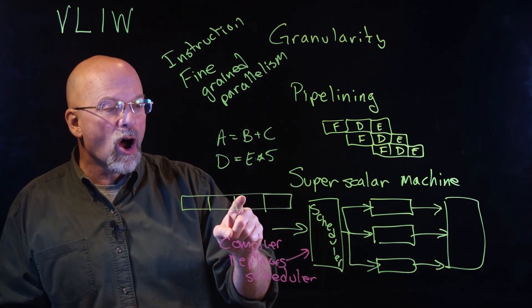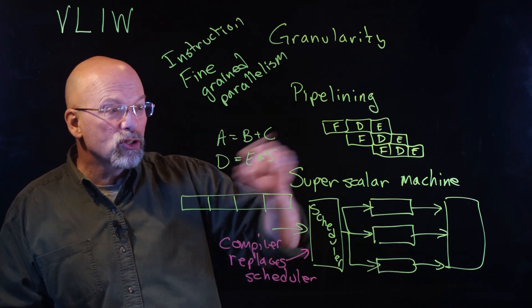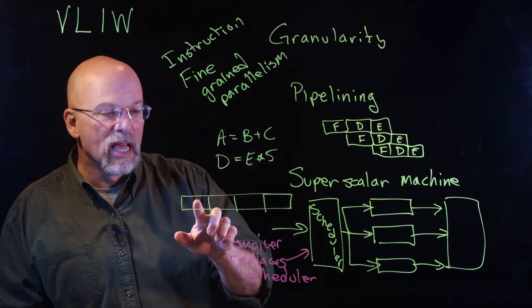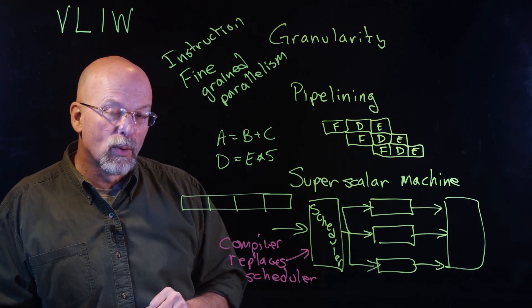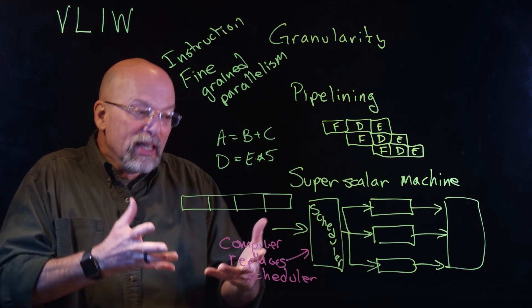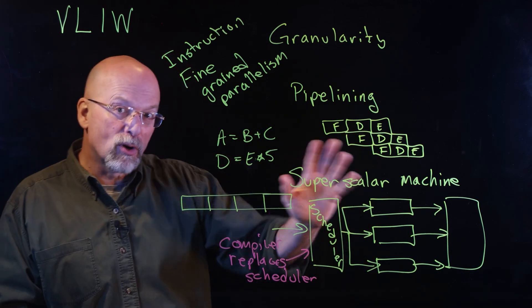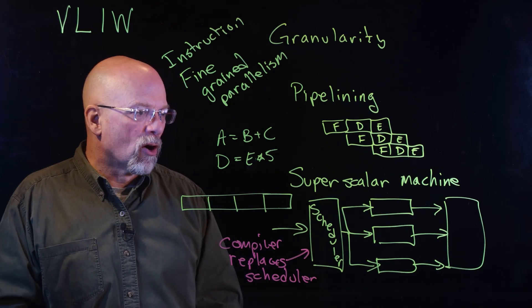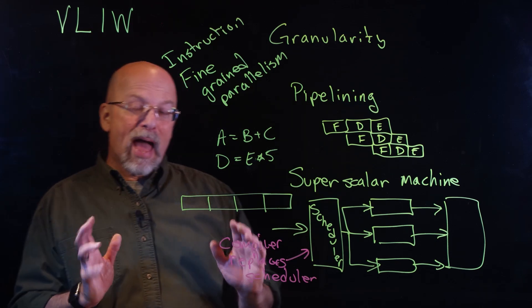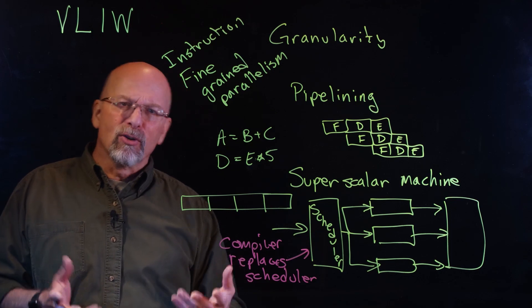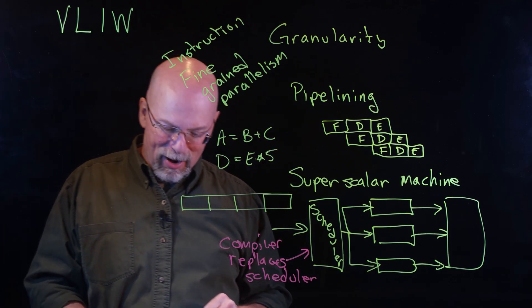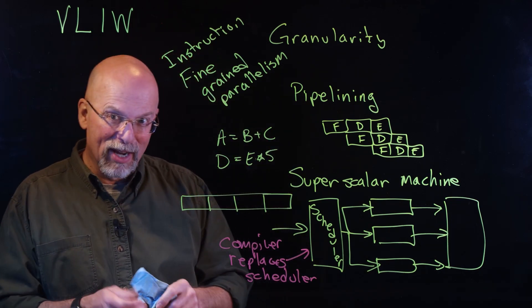The problem is that oftentimes, like with the super scalar machine, if there's a dependency, you may not be able to fill up all the slots at one time in order to fully utilize all of the pipes or all the execution units in our machine. That brings us to fine-grained data parallelism.